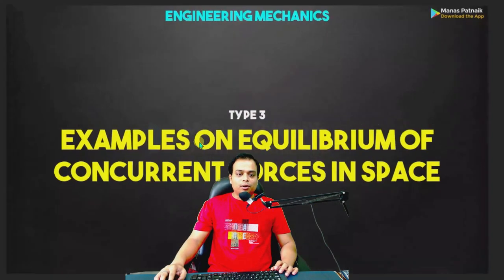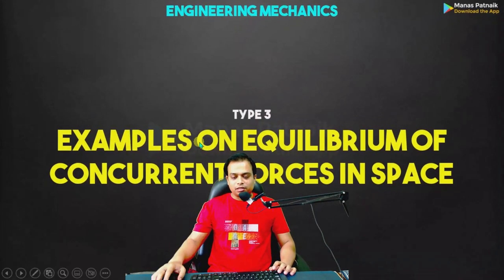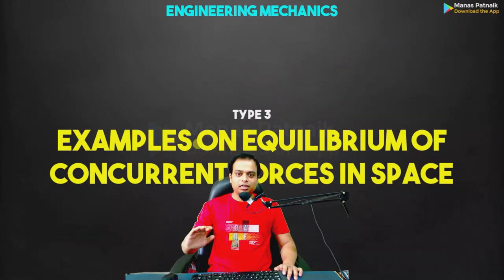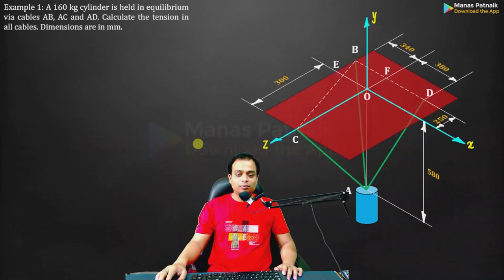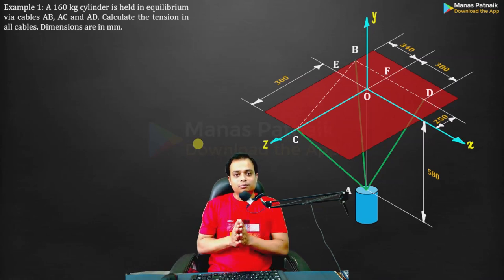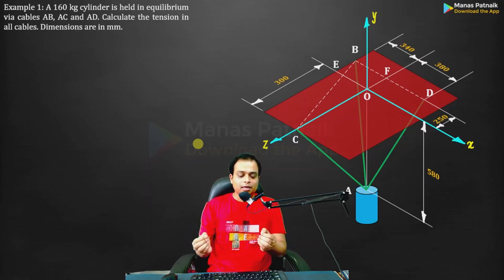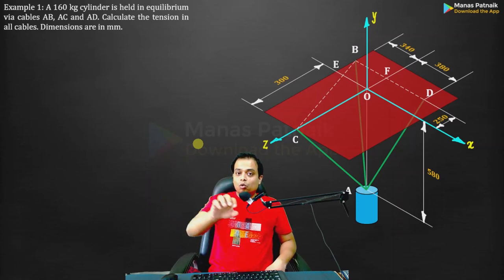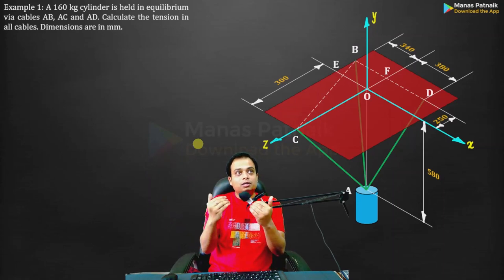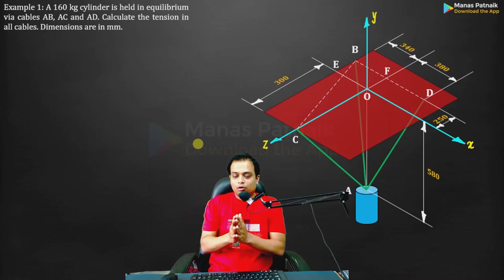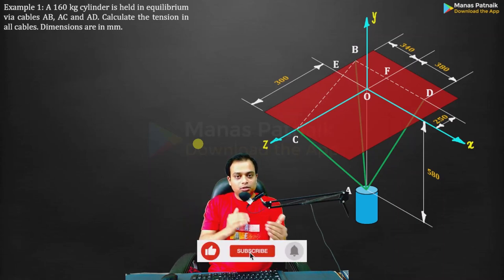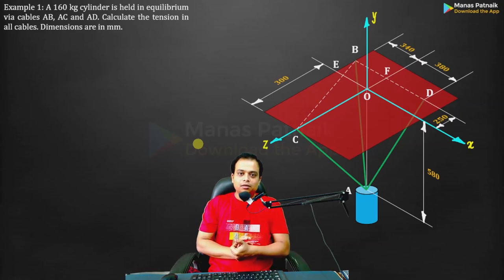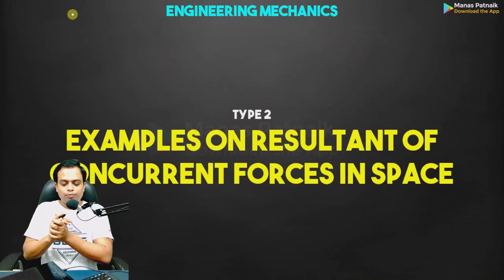The second type of problem I'll be discussing is going to be all about equilibrium of concurrent forces in space — equilibrium of forces, meaning summation Fx, summation Fy, summation Fz, and even the moments are going to be equal to zero. Do watch both examples right till the end. If you haven't watched the previous lecture — lecture number six — go ahead and watch that first, because there I explained how to express a vector in 3D notation and how to use unit vectors.